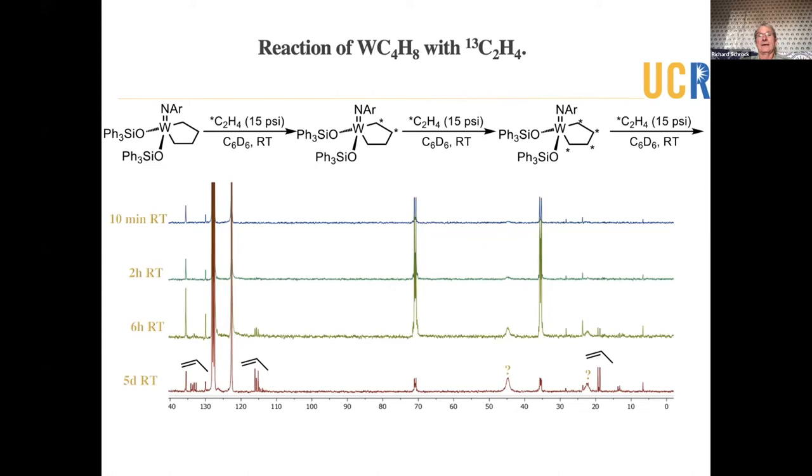Metallicyclopentanes could, in theory, break up and lose olefin and make an olefin complex. And that is, in fact, what happens when you add another donor. You lose ethylene and make a donor ethylene complex. But if ethylene is the donor, then you can exchange C13 ethylene into the ring. And it does, relatively slowly, under one atmosphere of ethylene, you get the dye labeled metallicyclopentane. And then the labeled completely, the metallicyclopentane labeled completely.